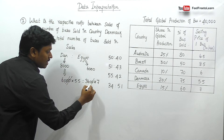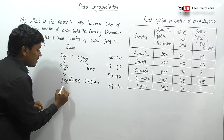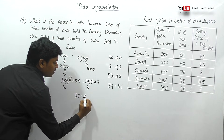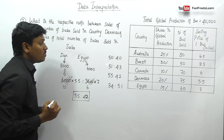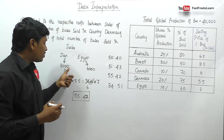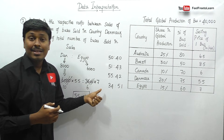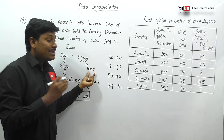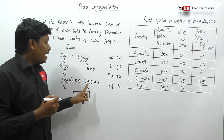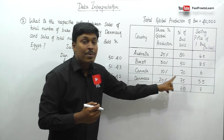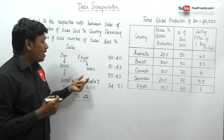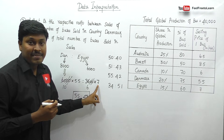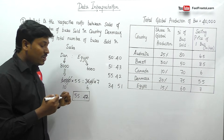The answer for question 2 is 55 : 42. Most students make the mistake of multiplying 8,000 × 5.5 and 6,000 × 7 — that is exactly wrong. Because Egypt is getting 15%, which is 6,000 buses, but they are selling only 60% of those, which is 3,600. Similarly, Denmark is getting 20%, which is 8,000, but selling only 75%, which is 6,000. Since we're finding sales value, we use 6,000 × 5.5 and 3,600 × 7, giving 55 : 42.